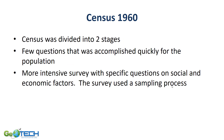Thanks to sampling, the United States Census was divided into two stages: a very short form that everyone in the United States would fill out, and a much longer form completed by a sample of the population covering social and economic factors.